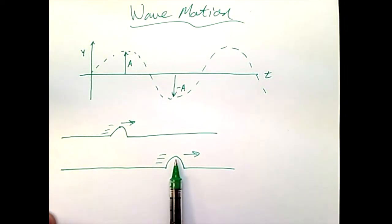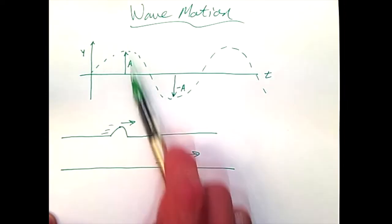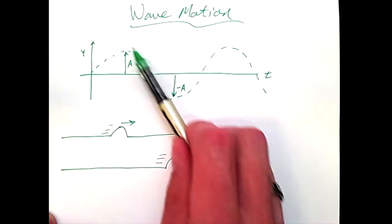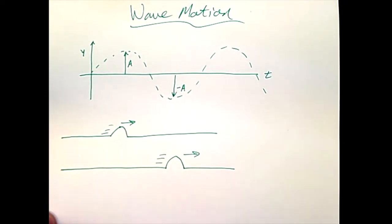But this pulse is not this crest on this graph above. Instead, just this particle moving up and down is how this graph is created. The particle moves up and then down, oscillating in time.